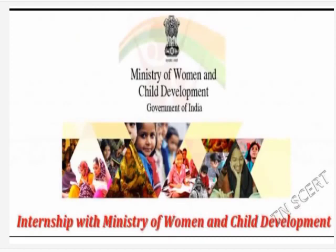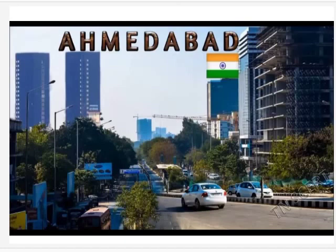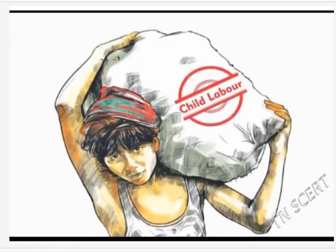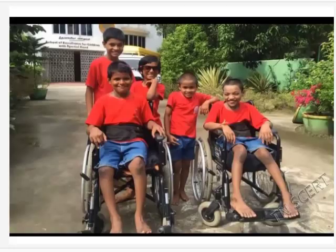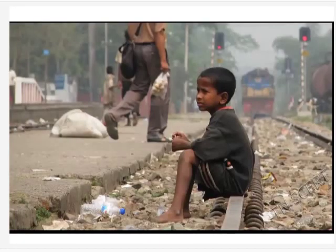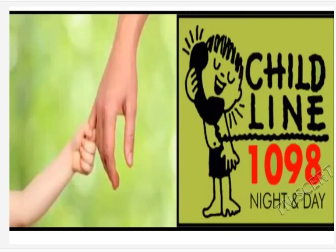In May 2013, child line in Ahmedabad rescued around 16 children who were working in various parts of the city. Child labor is an offense in India. Child line helps children who work as laborers, are abandoned by their parents, are differently abled, or live on the streets. Child line number is 1098 — one can call on this number and ask for help or inform if they find children who need help.